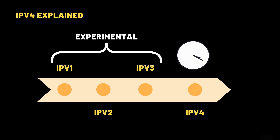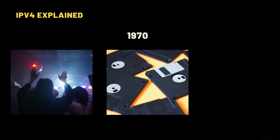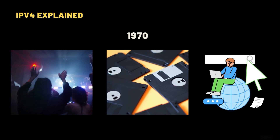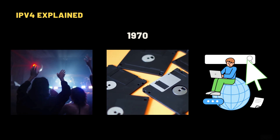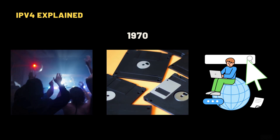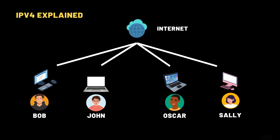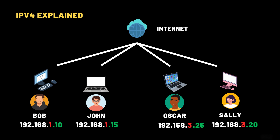Let's rewind the clock back to the early days of the internet. It's the late 1970s — disco is hot, floppy disks are cutting edge, and the internet is just an experimental idea between a few universities and the military. But even back then, the pioneers of networking asked a simple but critical question: if we connect machines across the world, how will they know where to send the data? And so IPv4 was born — a brilliant but modest solution designed to connect just a few thousand computers.